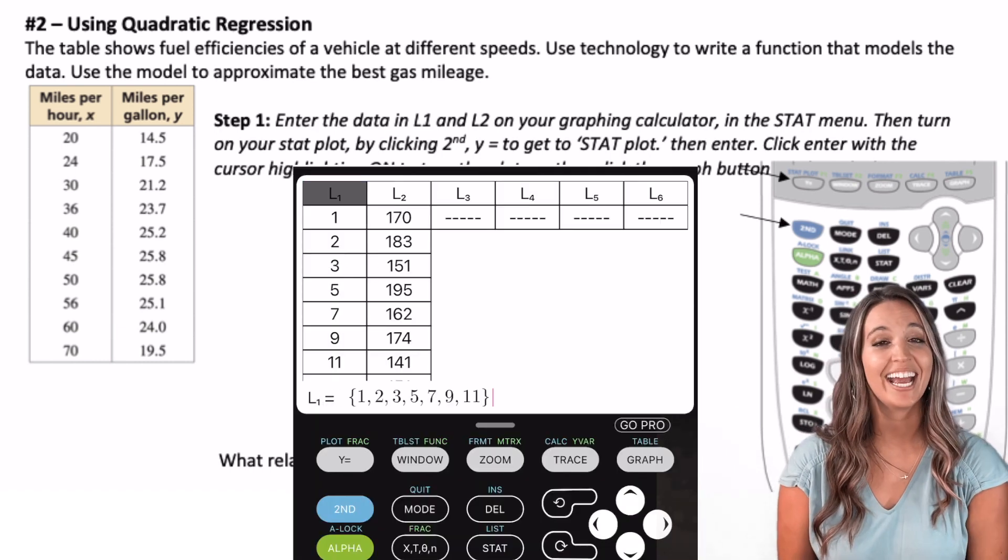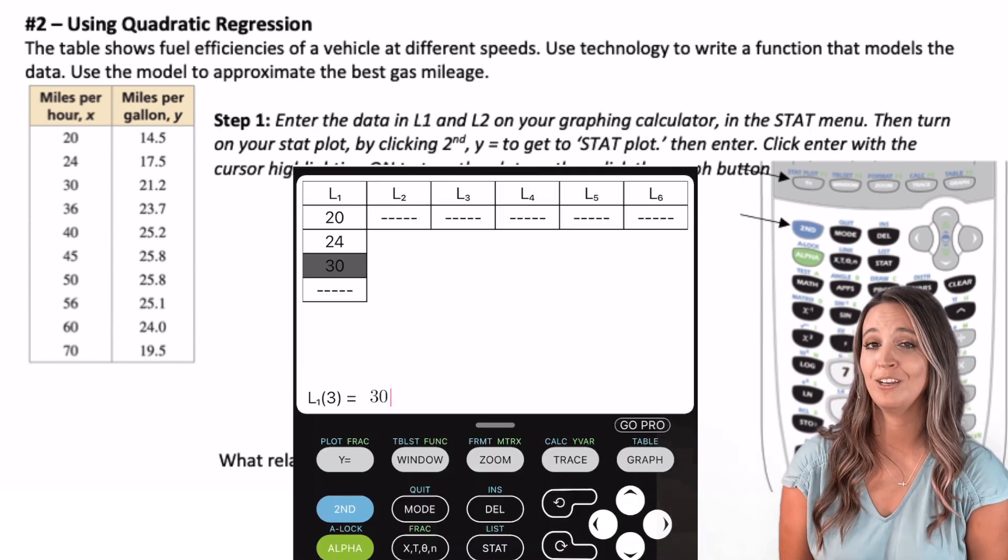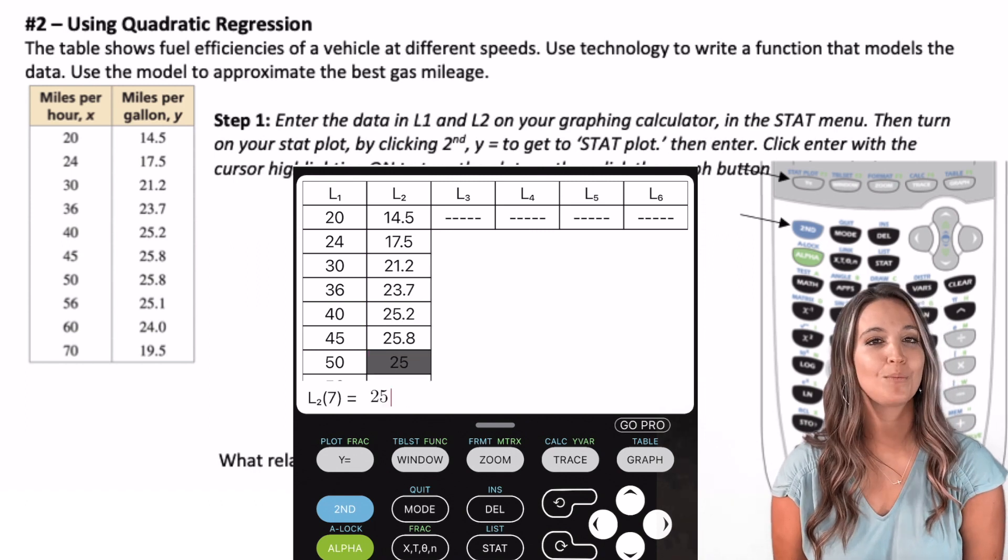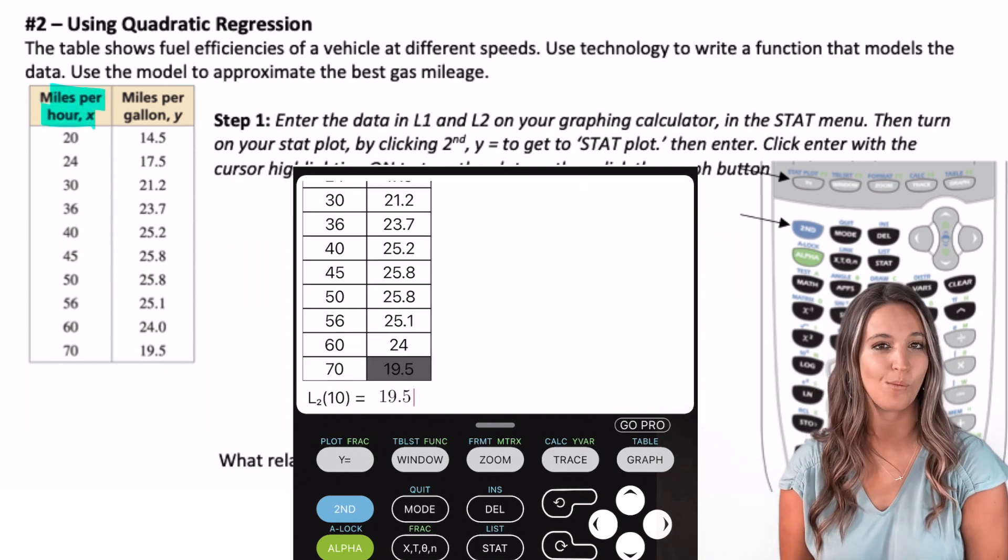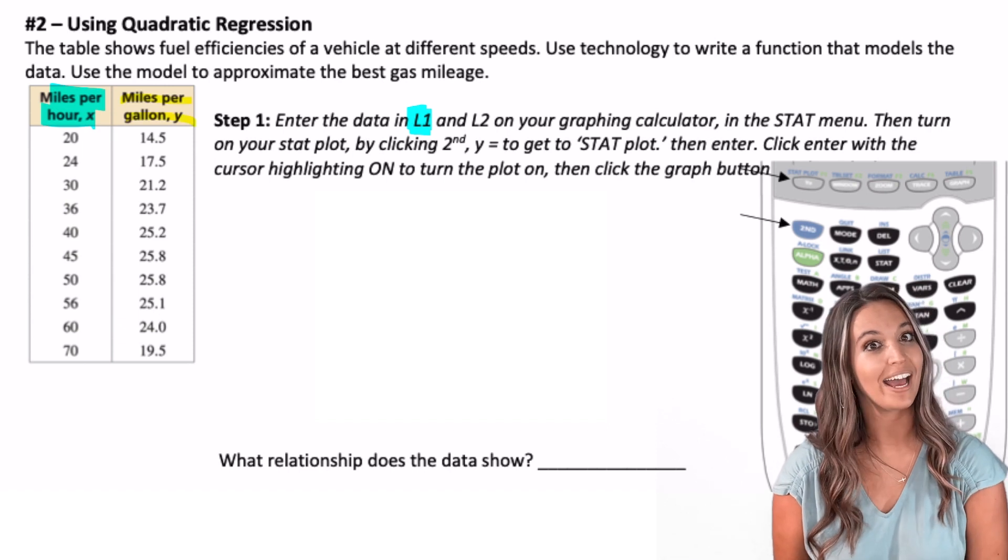Start by entering the data in list one and two in the stat menu on your graphing calculator. We'll enter miles per hour x into list one and miles per gallon y into list two.